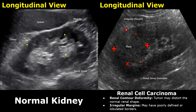The mass has irregular and ill-defined margins. A mass with smooth round borders is often benign, but when it has irregular borders, it may be a malignant mass and requires further evaluation. Although not shown here, this mass will show internal vascularity on color Doppler. It was later confirmed to be renal cell carcinoma through a biopsy.